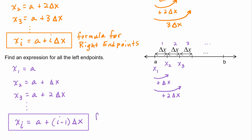This gives us the formula for all the left endpoints. Both formulas are easy to use, but because the formula for right endpoints is a little bit simpler, when we have a choice, we like to use it.